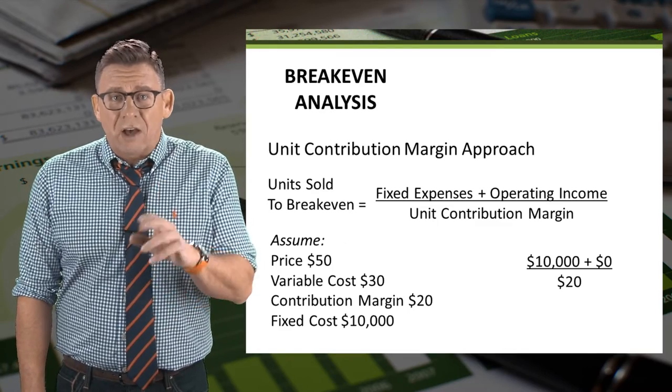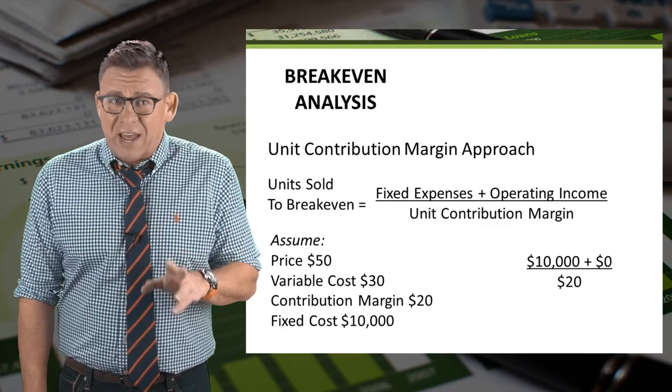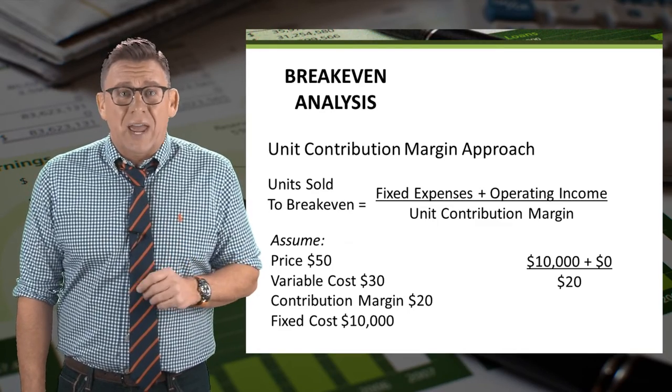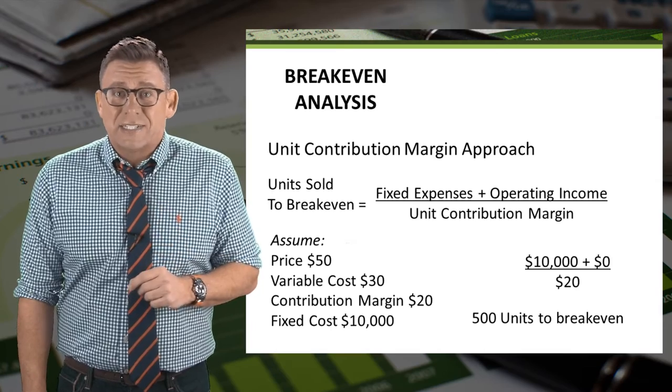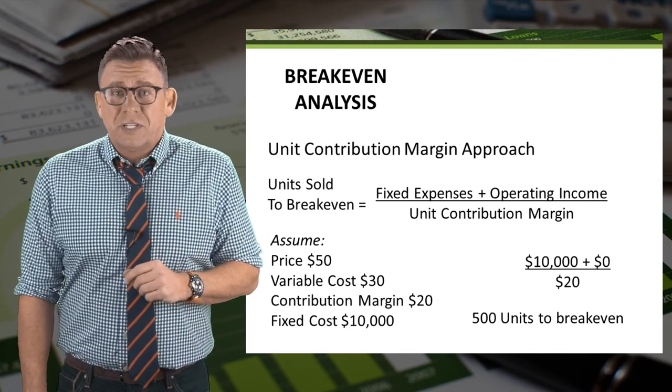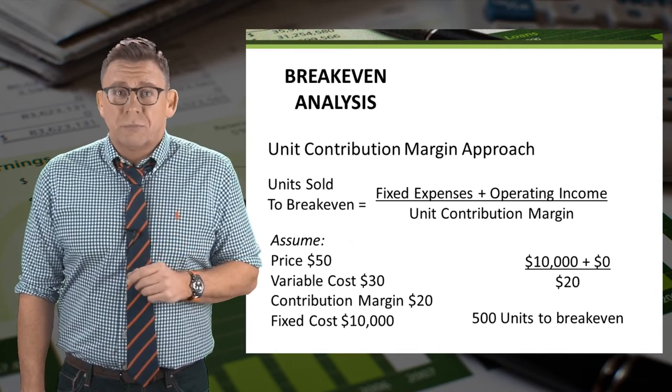Thus we've calculated in a much faster and easier way that 500 units need to be sold in order to break even.